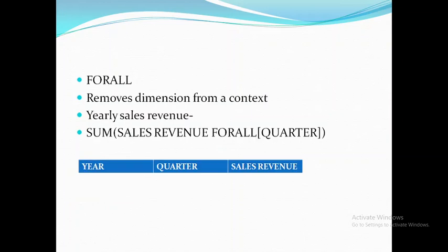FOR ALL is used to remove a dimension from the context. For example, if my table has Year, Quarter, and Sales Revenue, and I want yearly sales revenue, both Year and Quarter are included by default. But I don't want Quarter included, so I can use FOR ALL Quarter — this removes the Quarter dimension from the block so it only gives yearly sales revenue. In summary: IN requires you to explicitly define all dimensions; FOR EACH and FOR ALL consider the block's default dimensions, and let you add or remove dimensions on top of that.